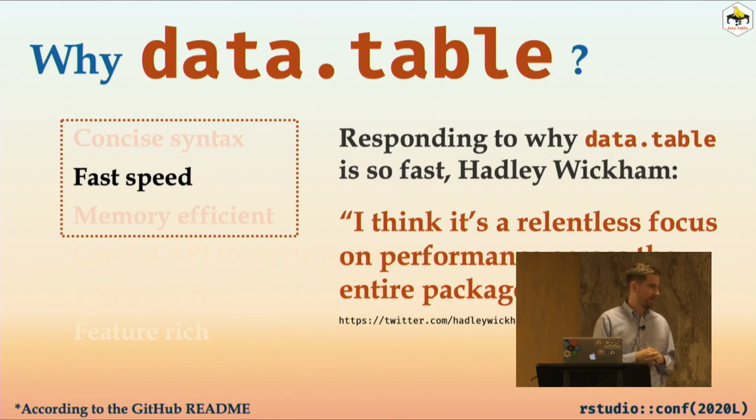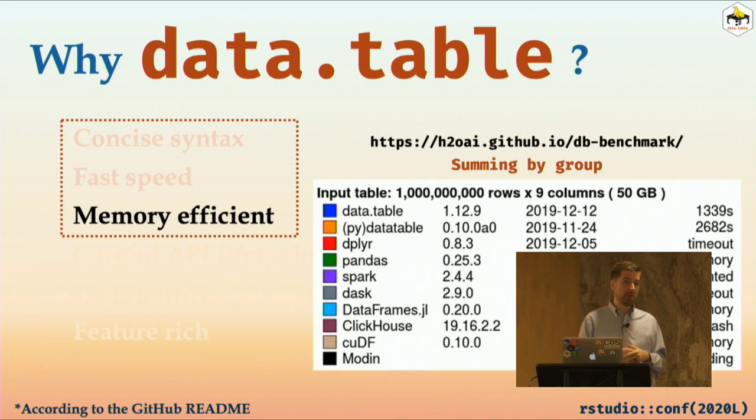So I'm going to show some examples that highlight exactly what those look like, but whenever you're seeing the i, j, by, I often translate that in my head to filter or range, mutate and group by. Next thing is that it's really fast. That may be the only reason why you're here is you heard that it's really fast. Responding to data.table, why data.table is so fast, this is what Hadley, I don't know if you've heard of him. This is what he said, I think it's a relentless focus on performance across the entire package. And I think this is true. I have contributed a little bit to the data.table package. And every time they pause and look at anything that could be slowing down your code or using up extra memory. And they do it to a crazy degree. And it's really paid off. The package is incredibly fast, which also goes along with it being very memory efficient.